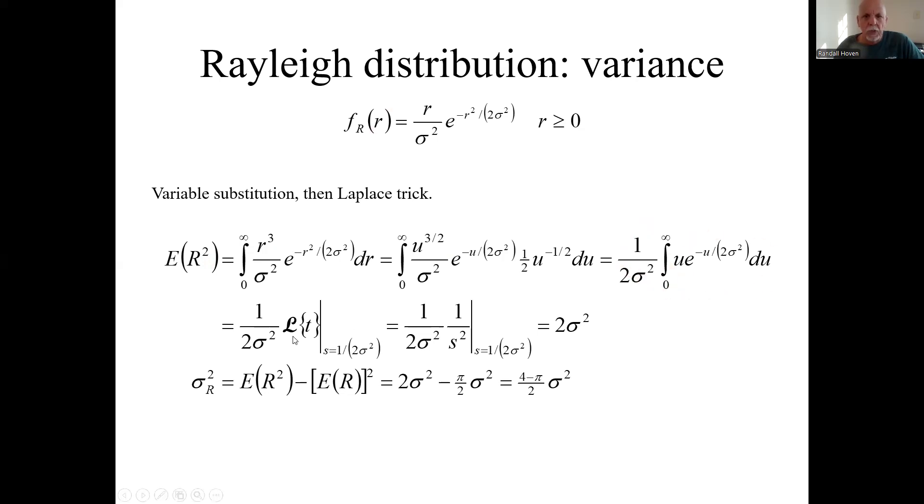This is more straightforward. This is just like Laplace transform of t, where again, s equals one over two sigma squared. Laplace transform of t is one over s squared. If you're familiar with Laplace transform, that's an easy transform. You almost have it memorized by doing very much of it. And anyway, that ends up being two sigma squared. That is the second moment here, the mean square.